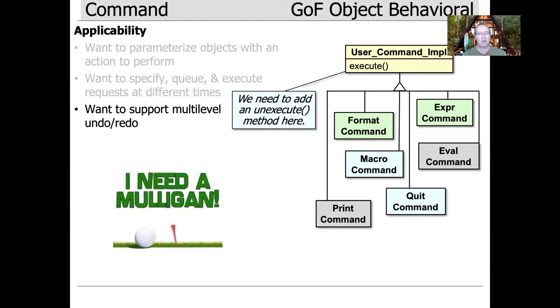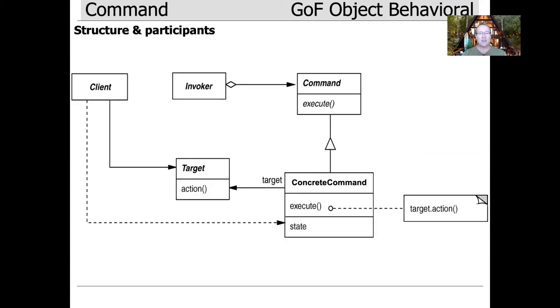if you realize you didn't want to do that, you can type Control-Z and it undoes it. Then if you really did want to do that, you can type Control-Y and it redoes it. This undo-redo mechanism is common in many situations. Let's take a look at the structure and participants of the pattern per the Gang of Four's nomenclature.